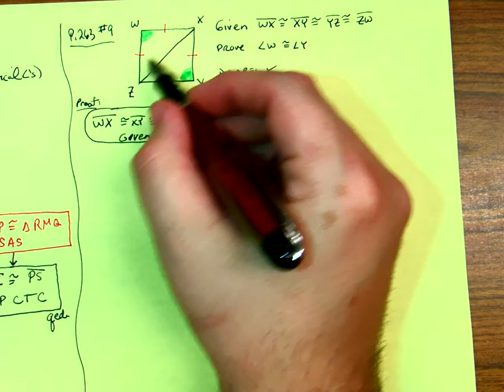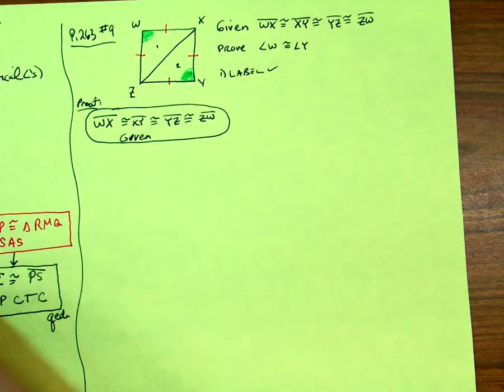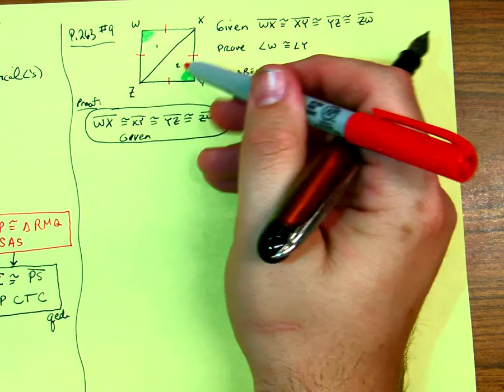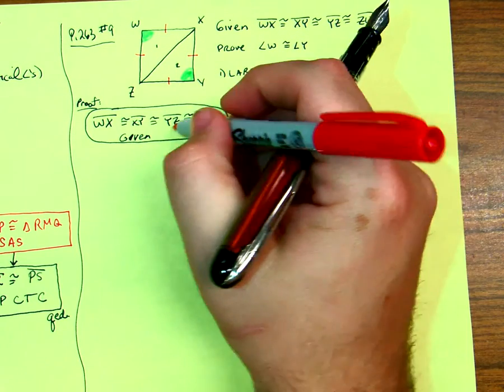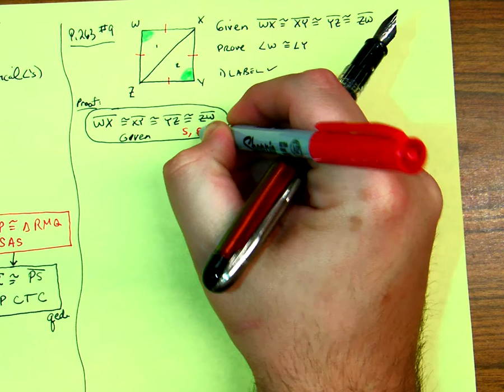Now, there are two triangles here. How many sides does this give us in the triangles? Two of them. So I have side and a side.